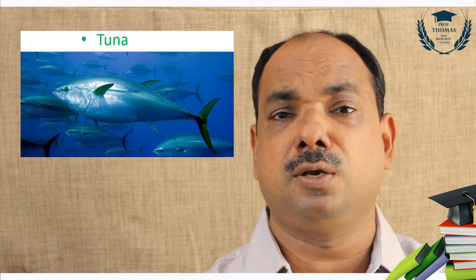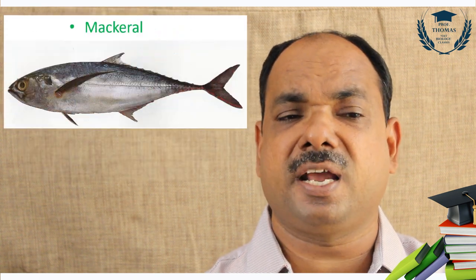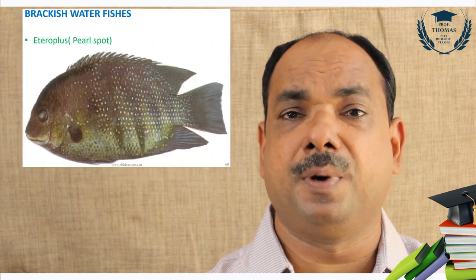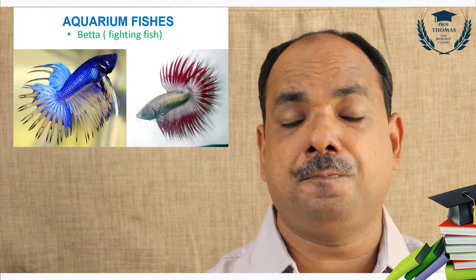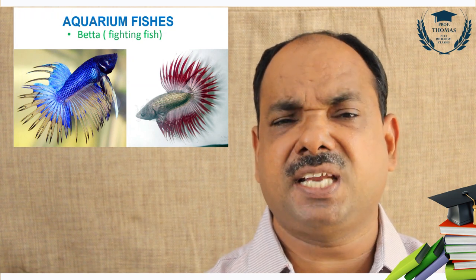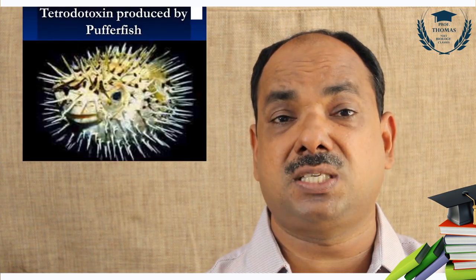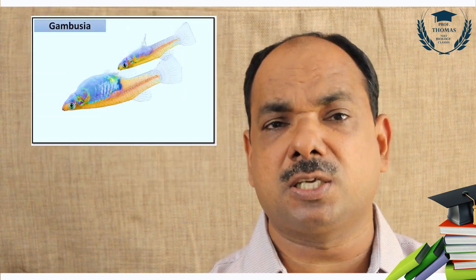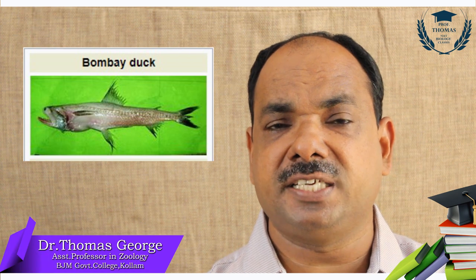Sardine is edible. Some are brackish water fishes. Marine fishes include tuna (Thunnus), seer fish, sardine, mackerel, Remora (sucker fish associated with sharks), and pomfret. Heteropneustes is called the pearl spot — the state fish of Kerala. The fighting fish is Betta splendens. Puffer fish produces tetrodotoxin, the most toxic substance — more toxic than potassium cyanide.